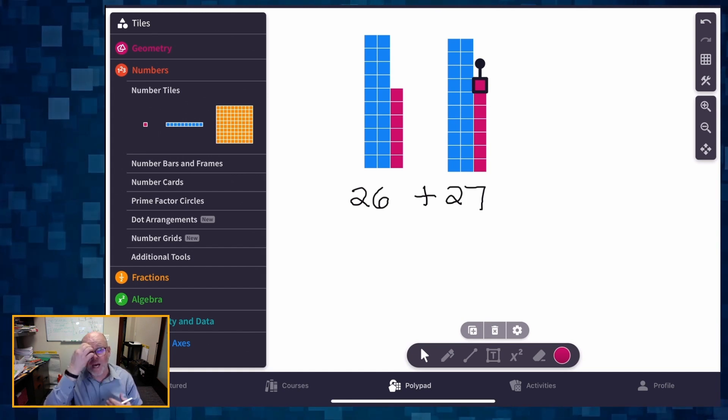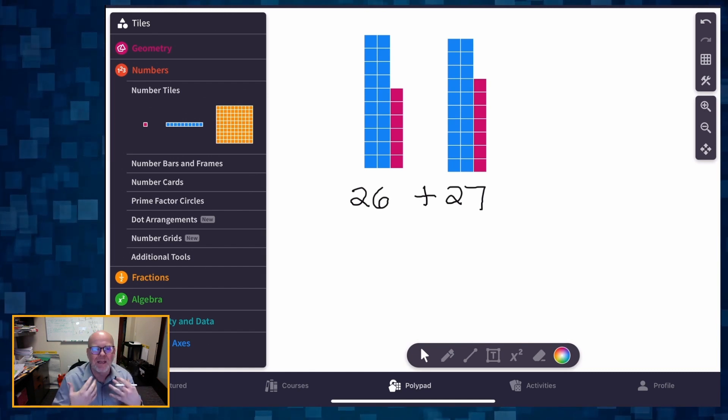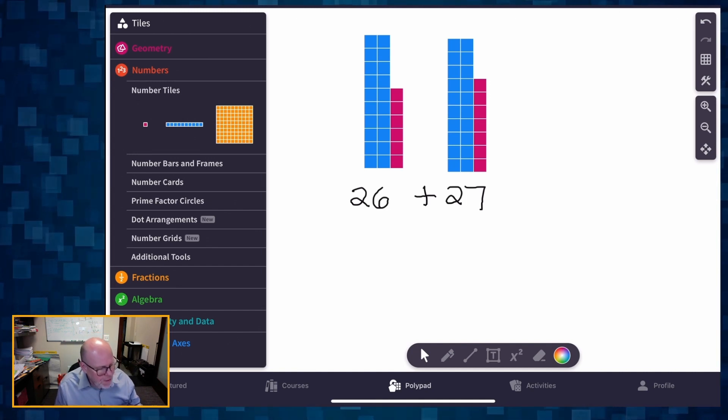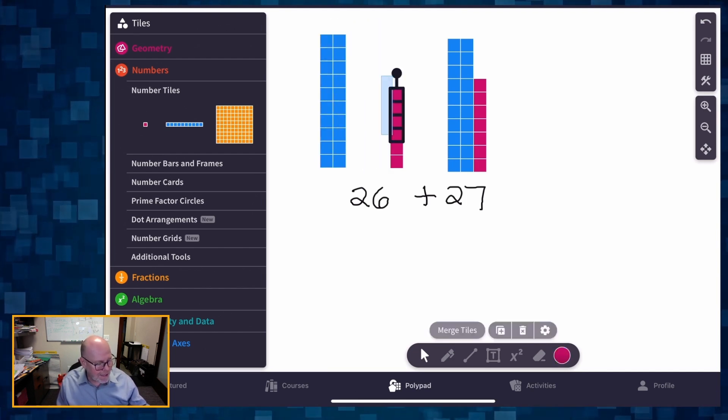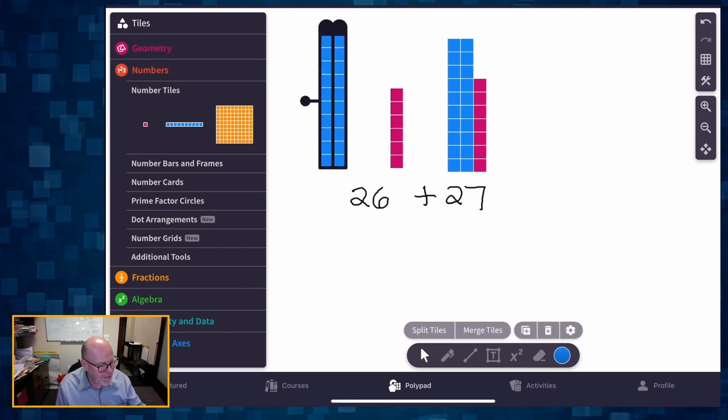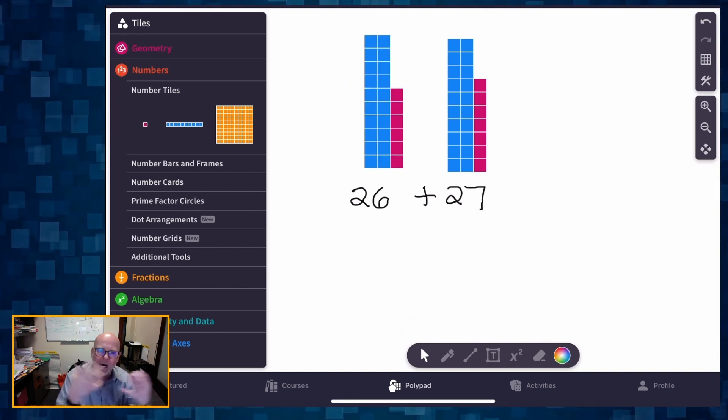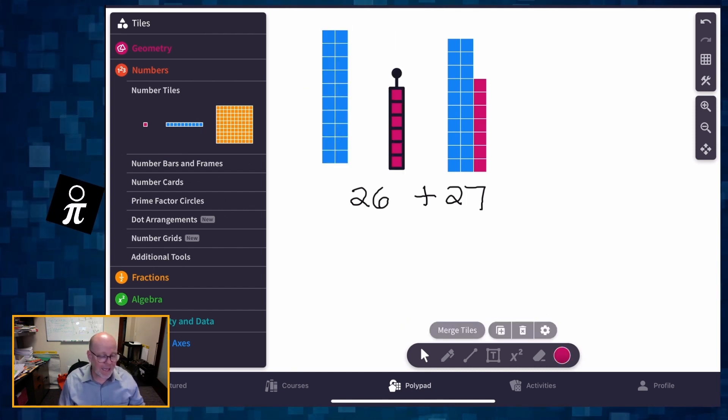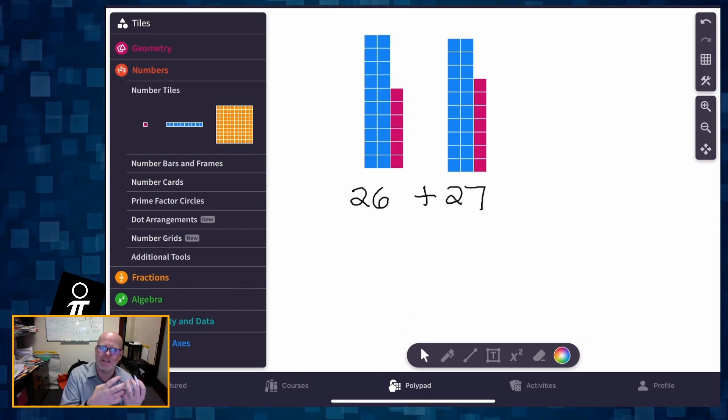Alright, so now that we've got 26 plus 27, the idea is how do we model this so that we're really helping students understand numbers and develop that number sense. So first thing we're going to do is help students recognize that 26 is a 20 and 6. So that's the thing that we want them to see, that 26 is not one number. It's actually a composite of two separate numbers. In this case we can think of it as 20 and 6. There's other ways to think of 26, but right now we're just going to think of it in the tens and the ones.